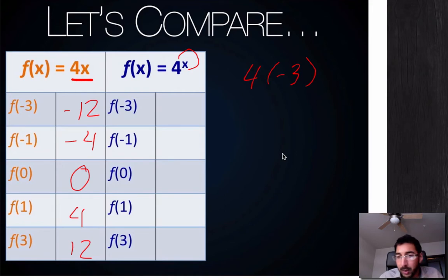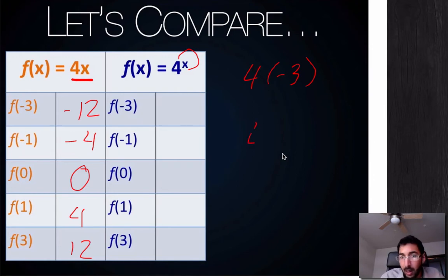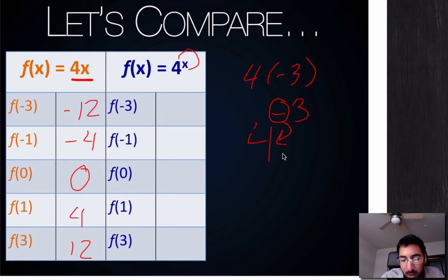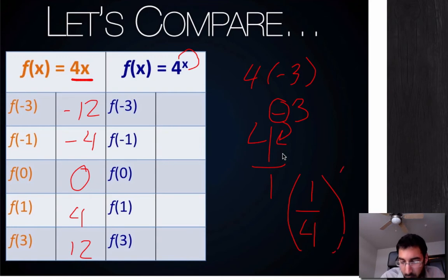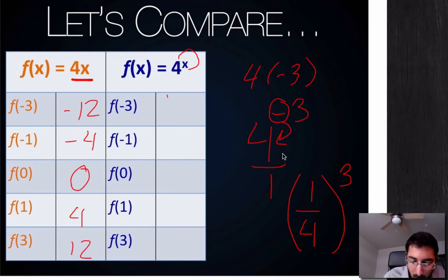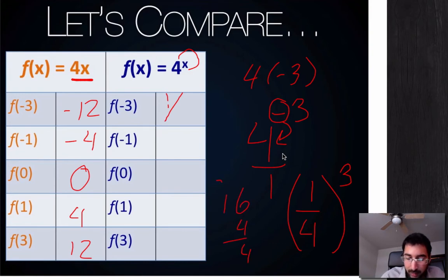Now let's see what happens when my variable is in the exponent. If I do f of negative 3, it's going to be 4 to the negative 3, not 4 times negative 3. Now this is very important — the negative sign flips the base. So if your base is in the numerator, it's going to make it 1 over 4 to the 3rd. And since it has an exponent, both the numerator and denominator are going to be cubed. So this would be 1 over 4 times 4 is 16, times 4 is 64 — so 1 over 64.